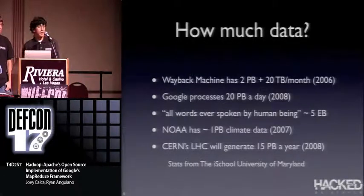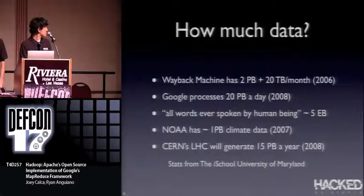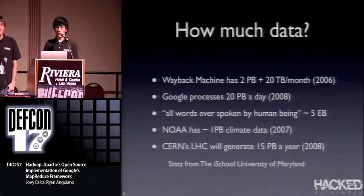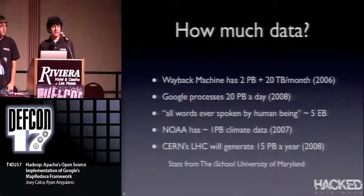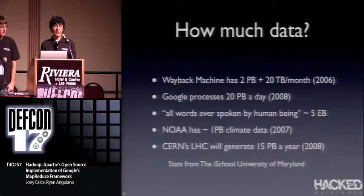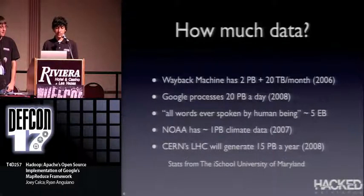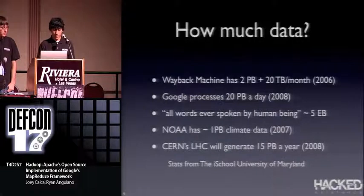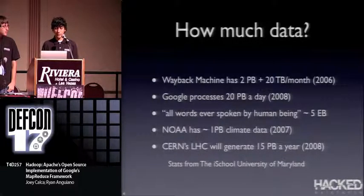How much data are we talking about? The Wayback Machine has about two petabytes of data total and is adding about 20 petabytes a month. Google processes 20 petabytes a day. What would you do if someone came to you with 20 petabytes and asked you to get information out of it? CERN's Large Hadron Collider generates 15 petabytes a year when it's up and running. These are the kinds of large amounts of data you need to be able to sift through and analyze.